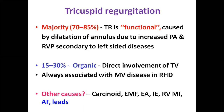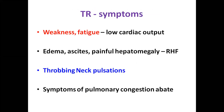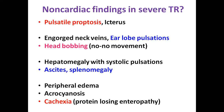Symptoms of severe TR are of low cardiac output and right heart failure. Patients may complain of throbbing neck pulsations due to prominent V waves. Non-cardiac findings in severe TR due to chronic venous congestion include pulsatile proptosis, jaundice due to hepatic congestion, engorged neck veins with earlobe pulsations, head bobbing, pulsatile liver, ascites, splenomegaly, peripheral edema, and cachexia with protein-losing enteropathy in long-standing severe TR.